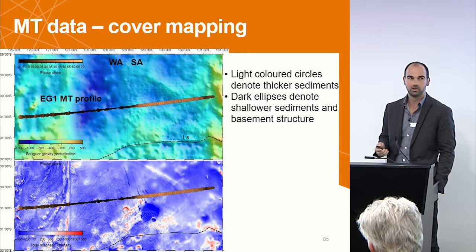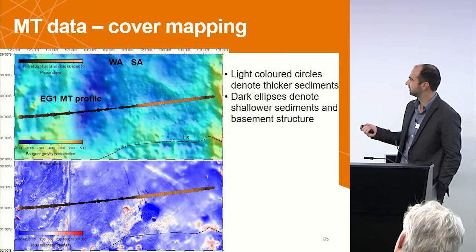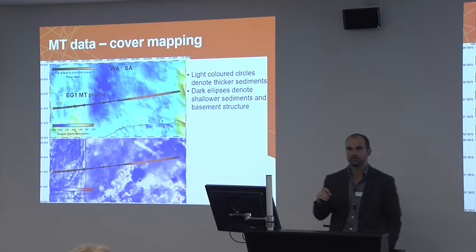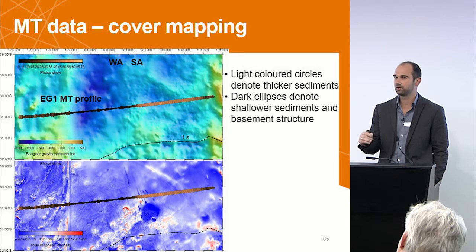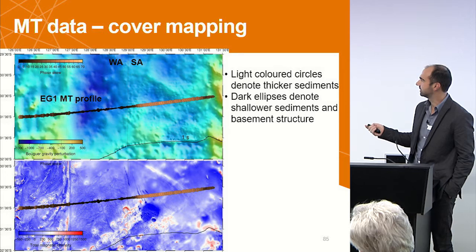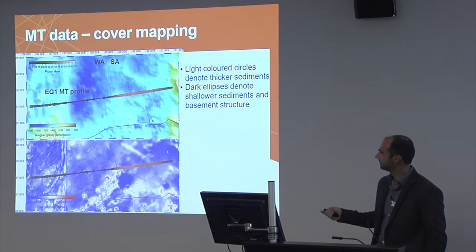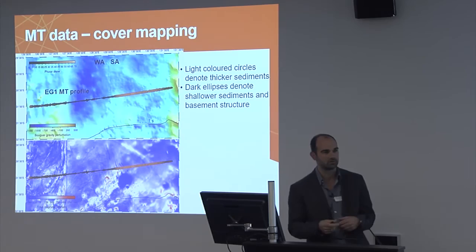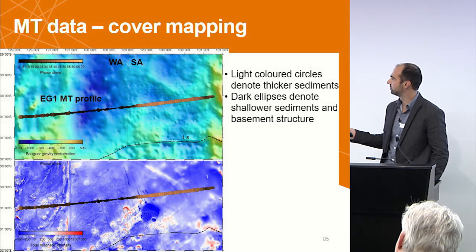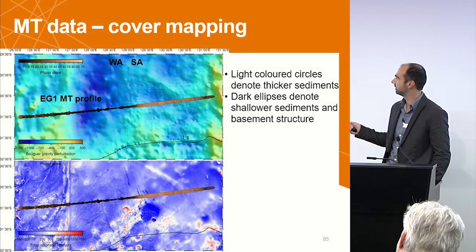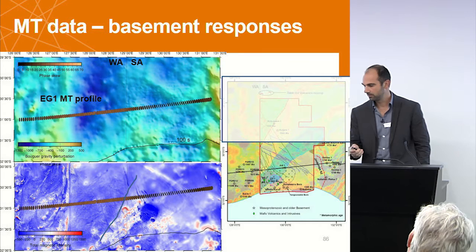I want to highlight two things: cover mapping and deeper structures. MT is quite good at estimating cover thickness along the profile. What I'm showing are phase tensor ellipses plotted for a periodicity of one second — that maps sediments if they're quite thick, or sees through to basement if sediments are thin. Light-colored circular shapes are indicative of sediments. Towards the WA-SA border the sediments are thicker, and then there's thinning. Distortion in the ellipses indicates basement structure, so we're imaging fault orientations in the Madura Province. There's also thinning of sedimentary strata as we approach the edge of the Gawler Craton.